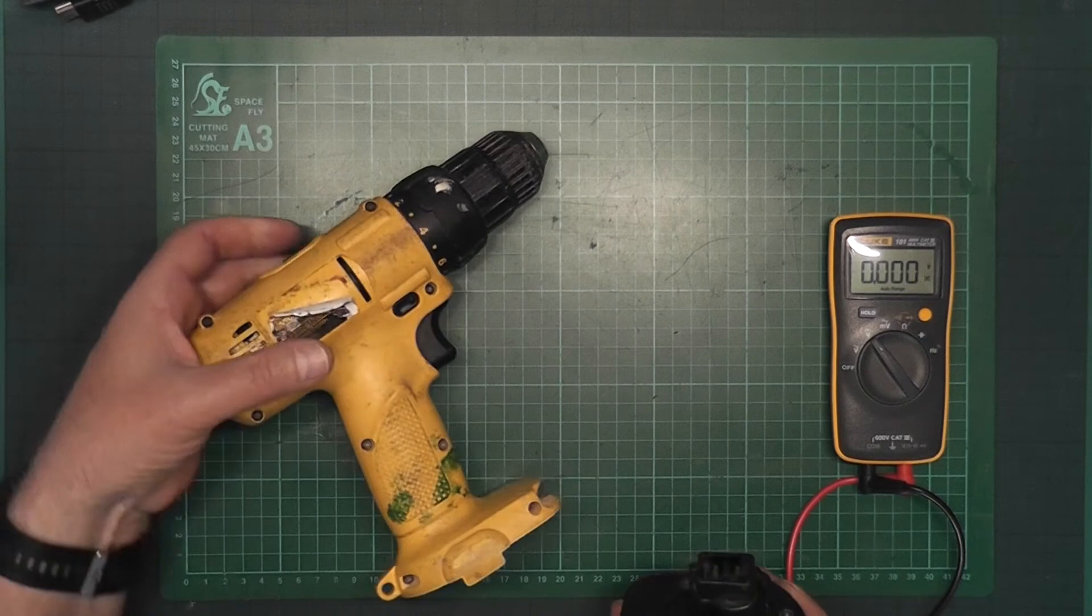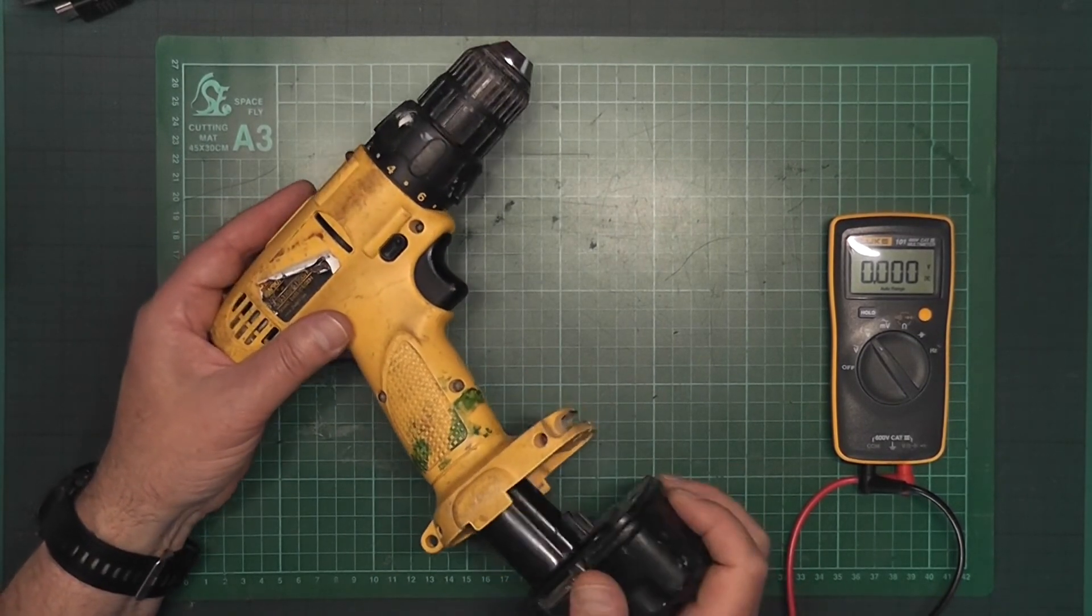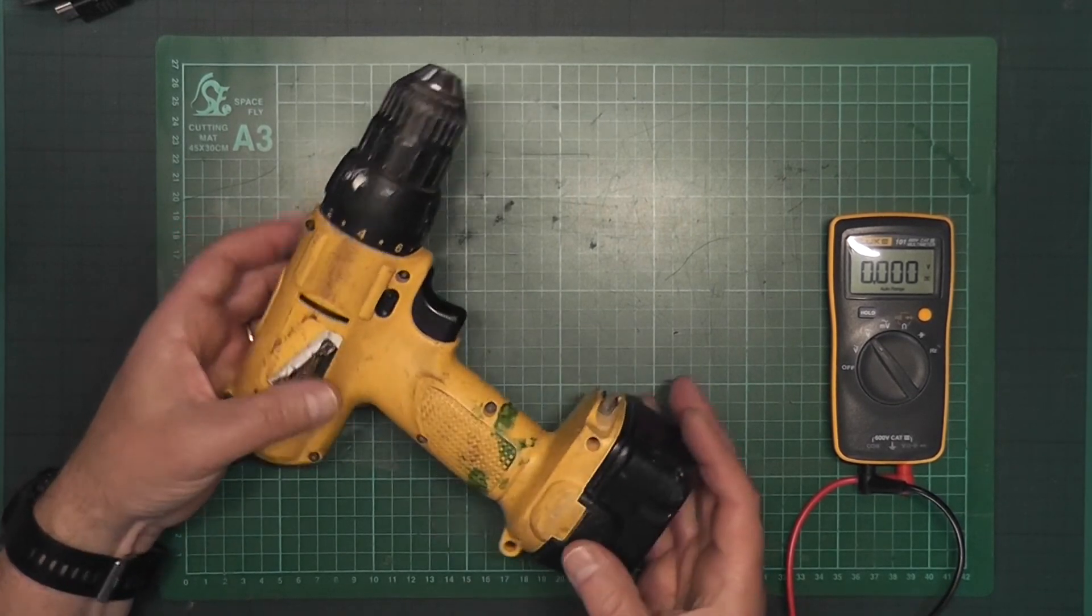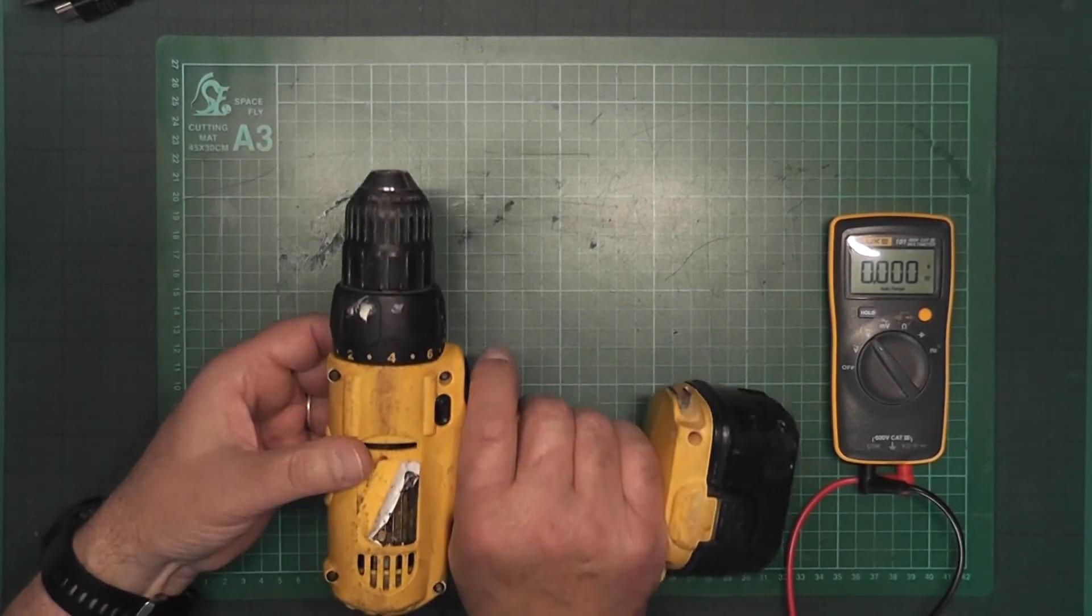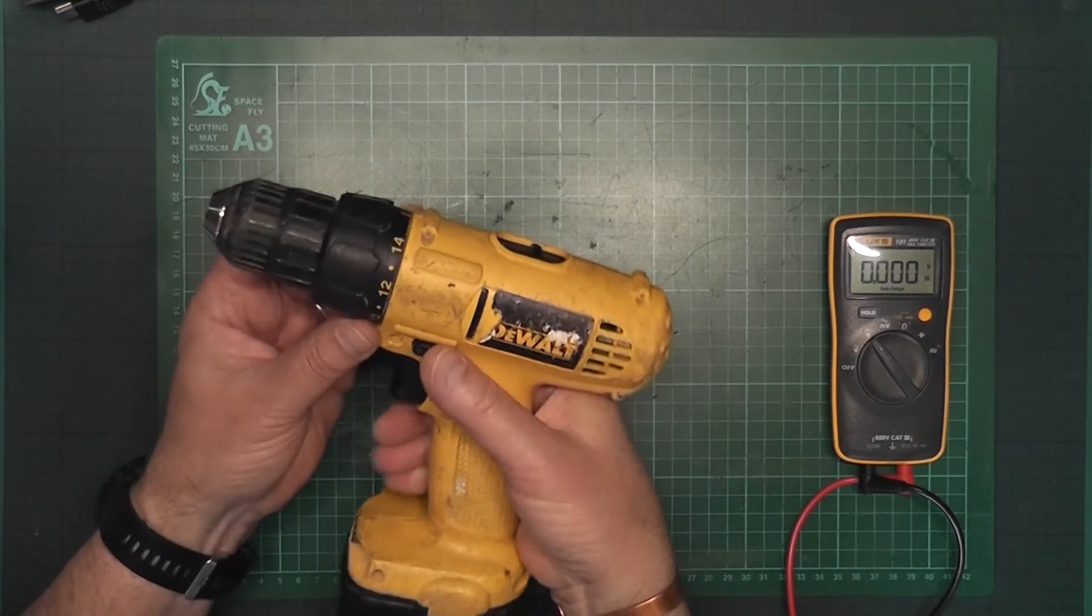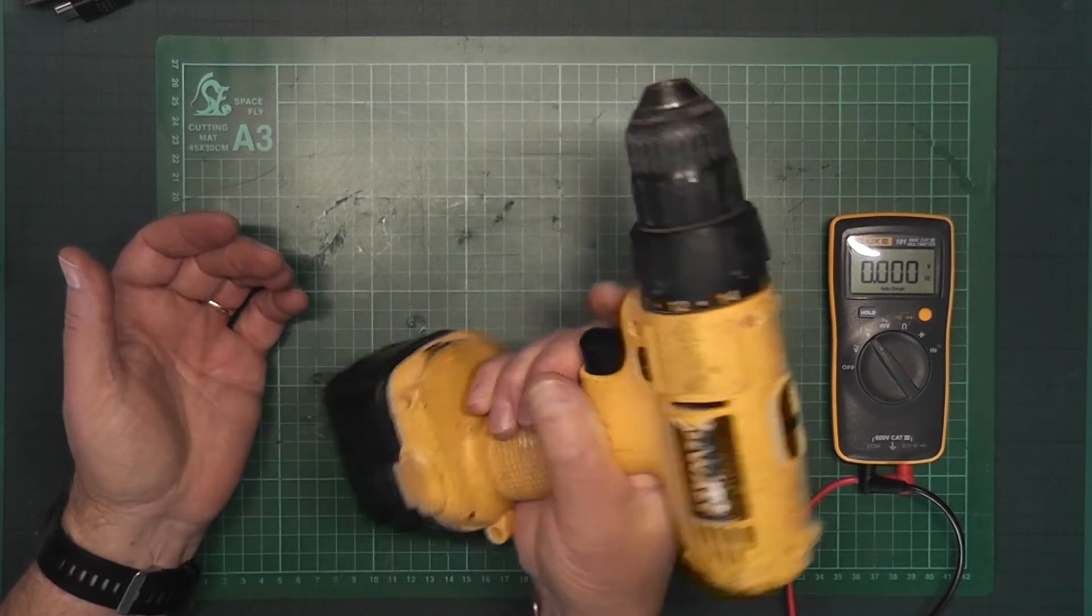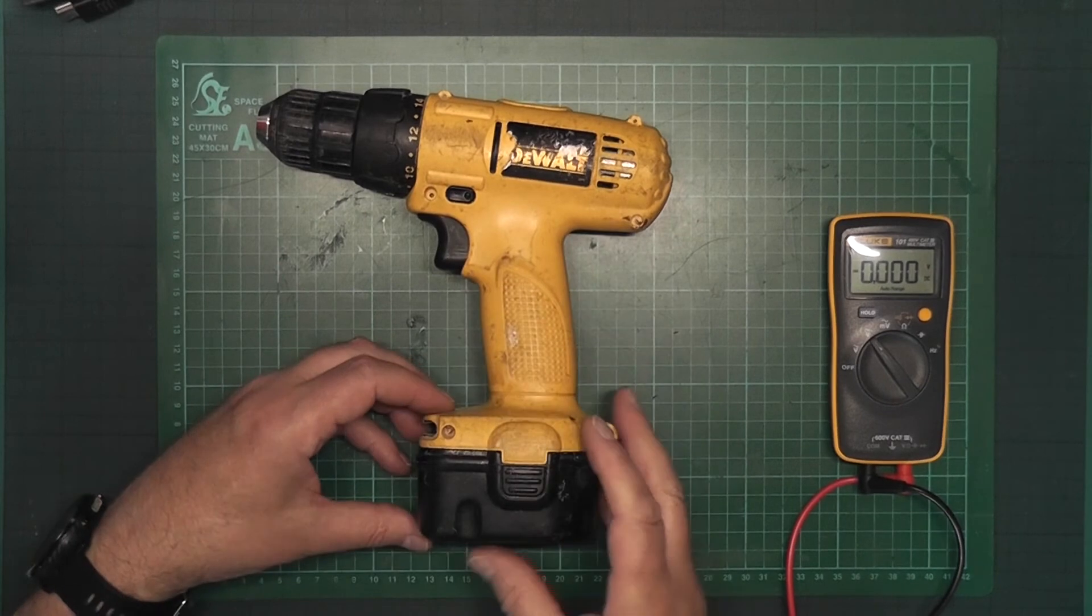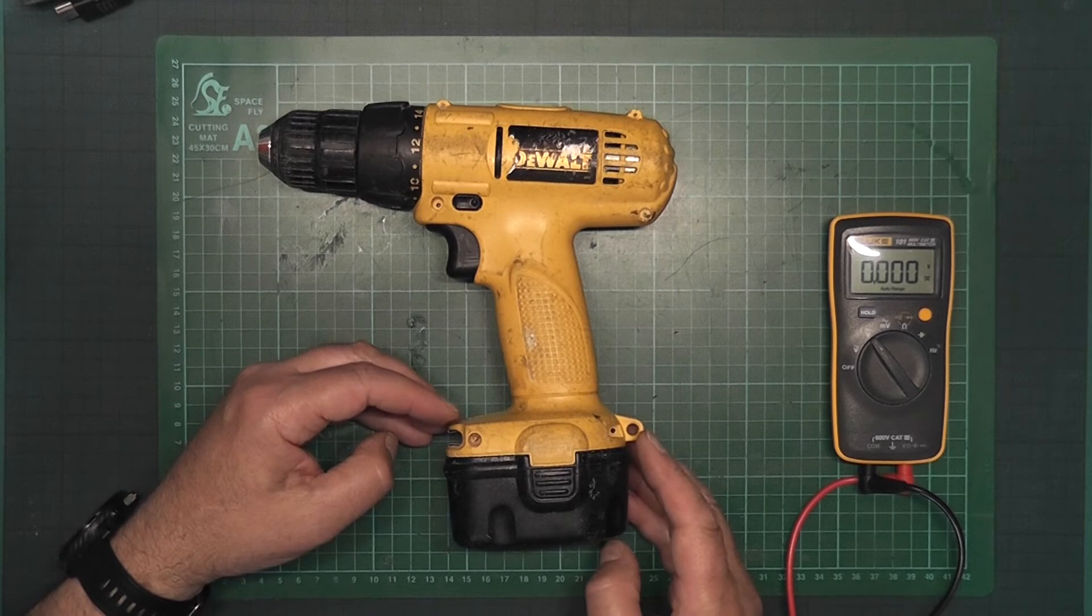So next thing to do is to put it into this old drill. Now remember, this used to be nickel cadmium or NiCd. And now, 30 amp, let's just see, turn it around the other way. So it is possible to upgrade, well, this particular one anyway.